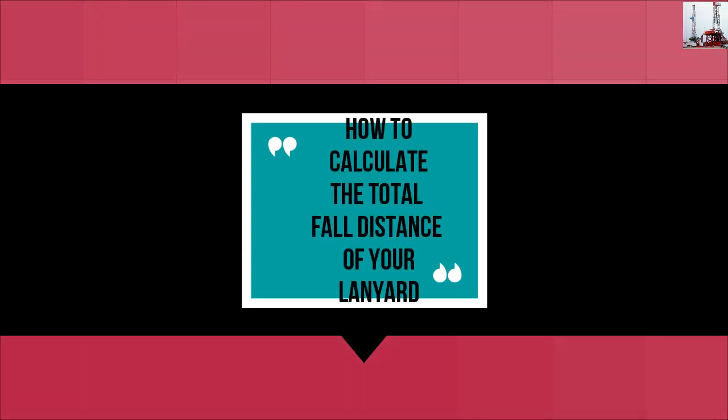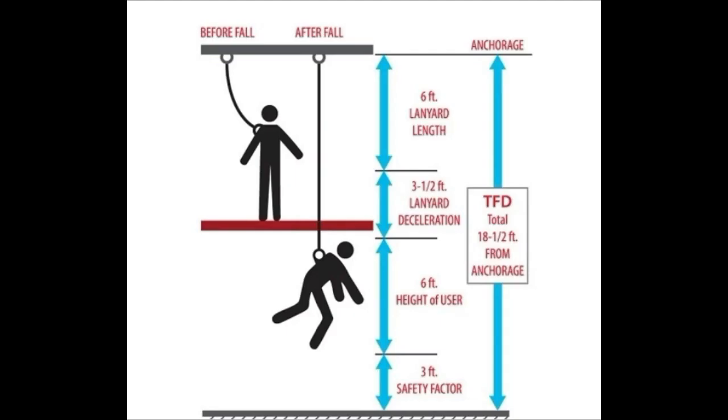How to calculate the total fall distance of your lanyard. According to the International Safety Equipment Association (ISEA) and the Occupational Safety and Health Administration (OSHA), personal fall arrest systems must be selected and rigged in a way that ensures the potential free fall distance does not exceed 6 feet (1.8 meters).